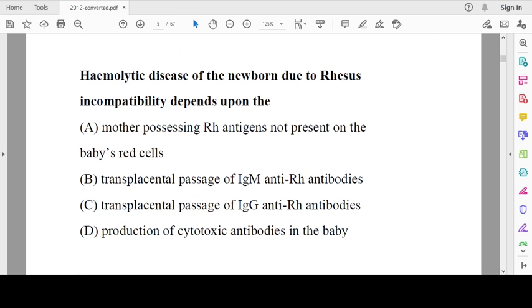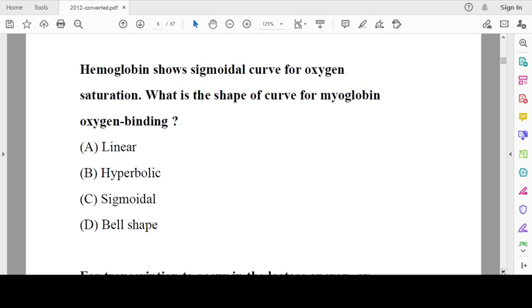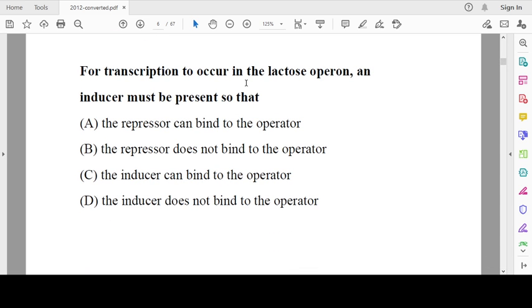Hemolytic disease of newborn due to Rh incompatibility depends upon transplacental passage of IgG anti-Rh antibody. IgG is the only antibody that can cross the placental barrier. Hemoglobin shows a sigmoidal curve for saturation; myoglobin is hyperbolic in nature. For transcription to occur in lactose operon, inducer must be present so that the repressor doesn't bind to operator.